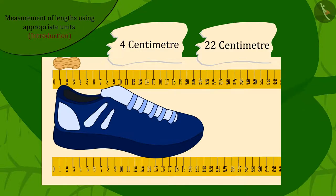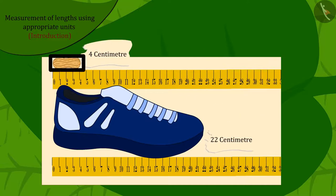Well done, kids! You have found the answers. The peanut is much smaller than the shoe, so the length of the peanut will be 4 cm and shoe length will be 22 cm.